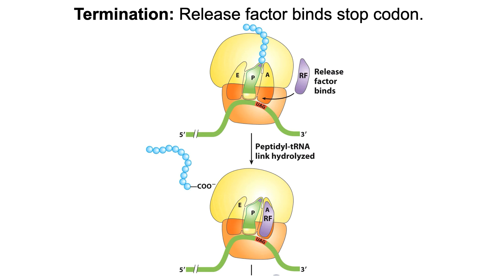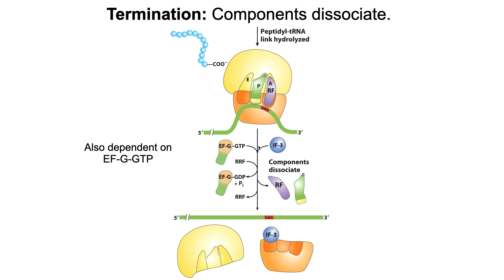Eventually the A site contains a stop codon — one of the three stop codons. At that point there is no transfer RNA with an anticodon that recognizes a stop codon. Instead, a protein called a release factor recognizes the stop codon at the empty A site, binds, and catalyzes the hydrolysis of the protein from the last tRNA and the dissociation of everything. IF3 then comes in to cover the E site, IF1 covers the A site, and the process can start all over again, producing the newly synthesized protein.